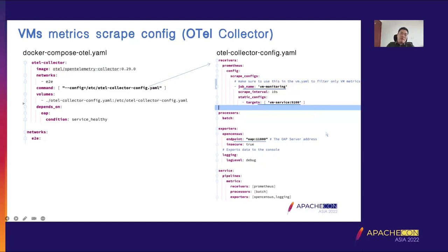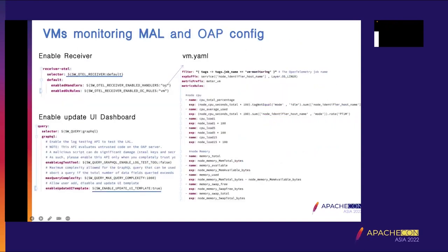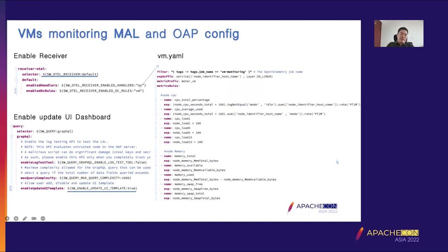This is an example OpenTelemetry collector scrape config. The job name is VM monitoring, the scrape target port is 9100, and it exports to the SkyWalking OAP server through the OpenSensors protocol. We also need to enable the receiver and set the MAL config file name in the SkyWalking application config or environment variables. If we want to customize the MAL, such as adding new metrics, expressions, or custom dashboards, we need to enable the dynamic update UI template.